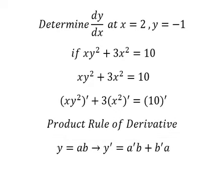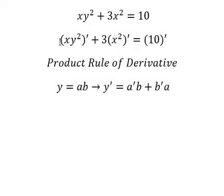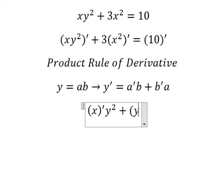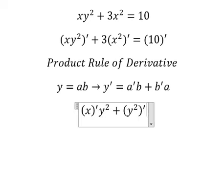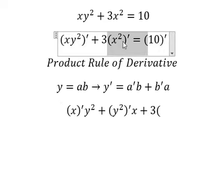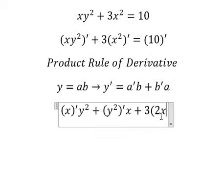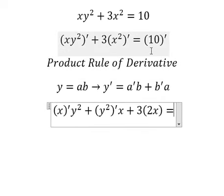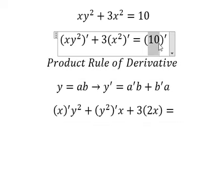We have y equals a times b, so if we apply the formula we got like this. So this one we need to do first the derivative of x multiply by y squared, later we need to do first the derivative of y squared multiply by x. This one we can apply the power rule of the derivative.